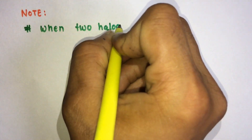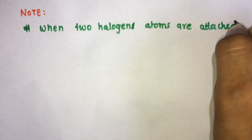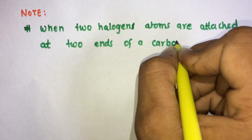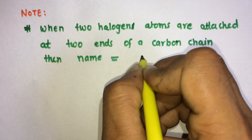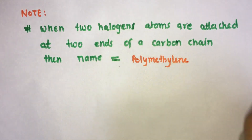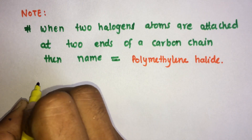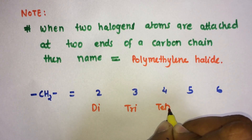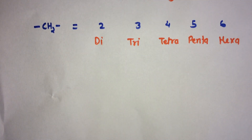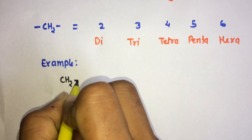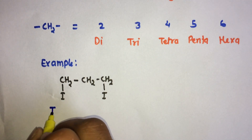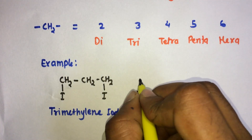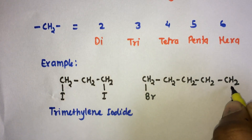Note: when two halogen atoms are attached at the two ends of a carbon chain, it is named as polymethylene halide. If the number of CH₂ groups in a compound is two, it is 'di'; three is 'tri'; four is 'tetra' or 'buta'; five is 'penta'; six is 'hexa'. For example, trimethylene iodide and pentamethylene bromide.